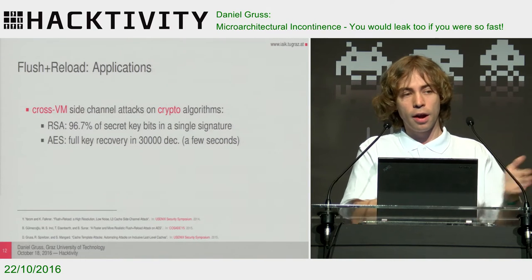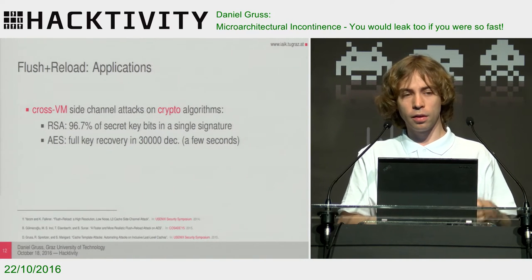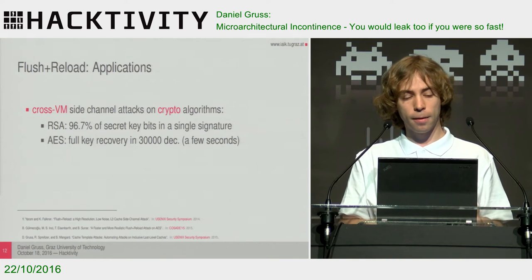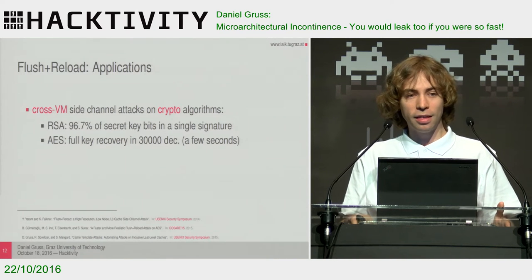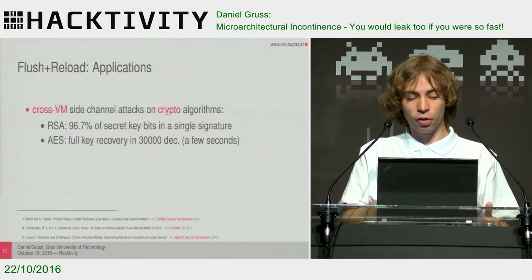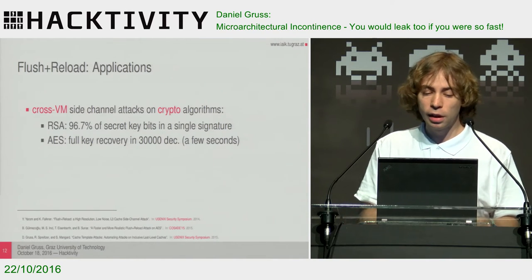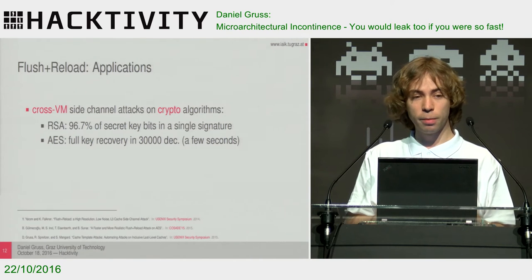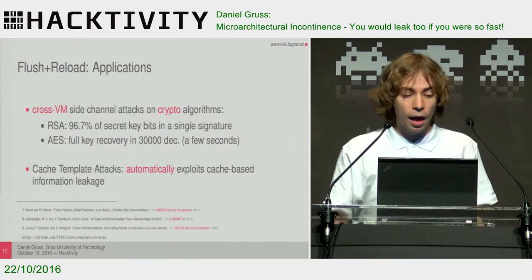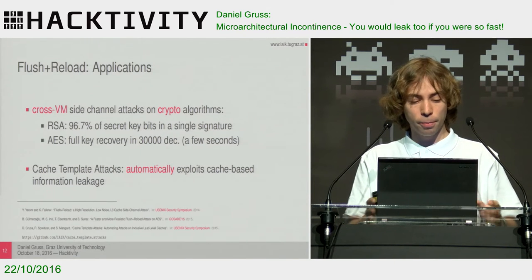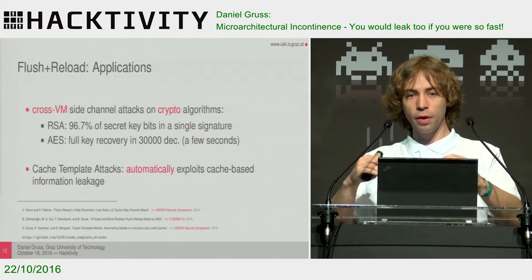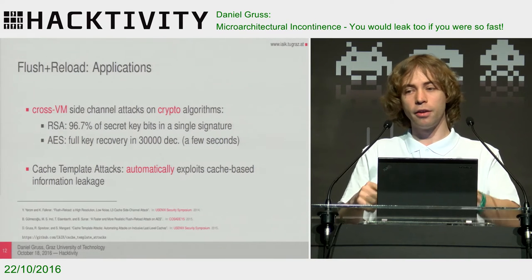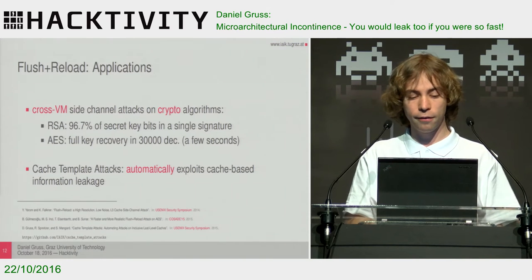You can do really nasty stuff with that. For instance, with RSA using a typical square-and-multiply routine for exponentiation, you can derive almost 100% of the key bits after observing a single encryption through the cache. For AES, we can obtain full key recovery in an asynchronous attack in 30,000 decryptions — that's just a few seconds. Also, cache template attacks allow to automate these attacks: you just say you want a certain event and want to attack a particular library, and it will automatically find the addresses which leak this information on that event.